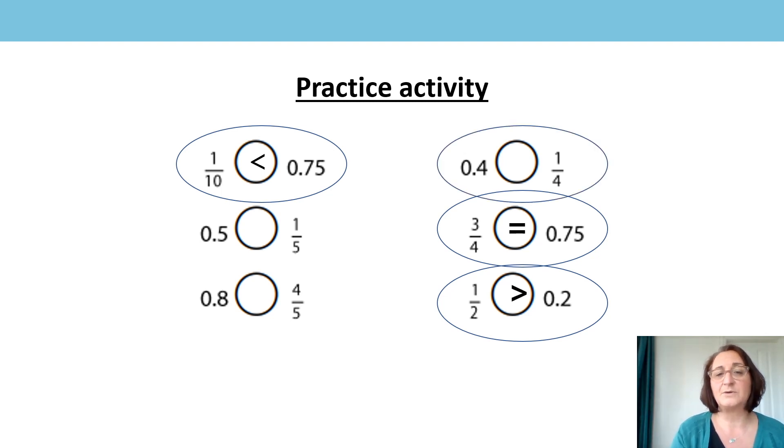Okay the next one I went to was 0.4 and a quarter and I got a little confused at first because I looked at the four where the tenths are and I looked at the four in the denominator and at first I thought they were the same but then I remembered that a quarter is equal to 0.25 so I know that 0.4 is greater than 0.25 so I could put my greater than symbol in there. Okay and I use the same understanding here where I know that 0.5 is equal to a half and that a half is greater than a half.